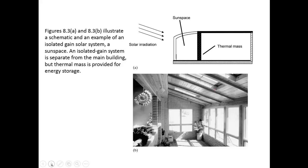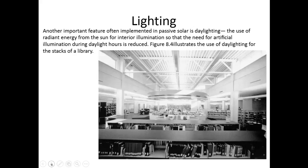Figure 8-3 looks at an example of an isolated gain solar system — a sun space. You have a space completely encapsulated by a window, with a large wall in front marking one side of the sun space that absorbs heat and dissipates it into the house. Another important passive solar feature is daylighting — the use of energy from the sun for interior illumination, which eliminates the need for artificial lights during daytime hours and reduces energy needs.